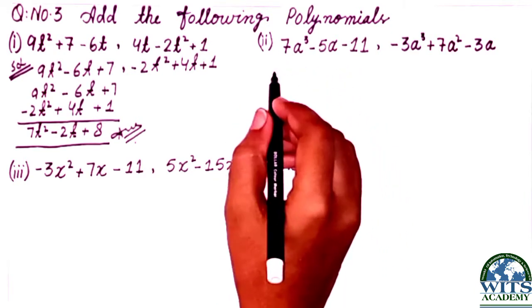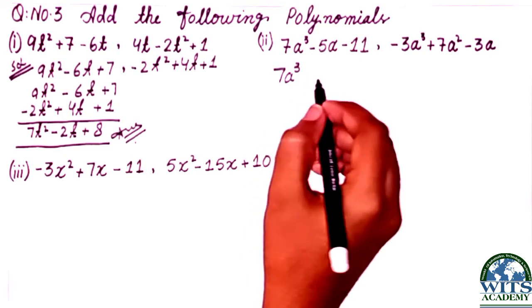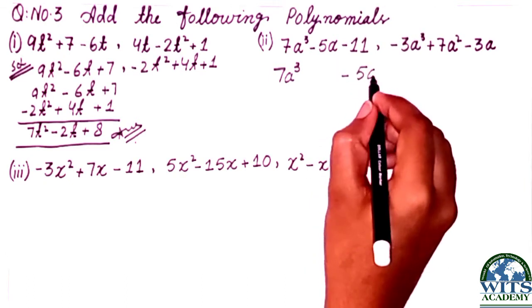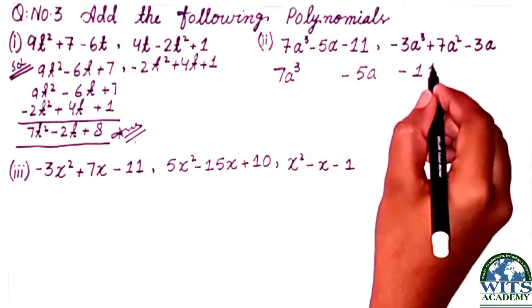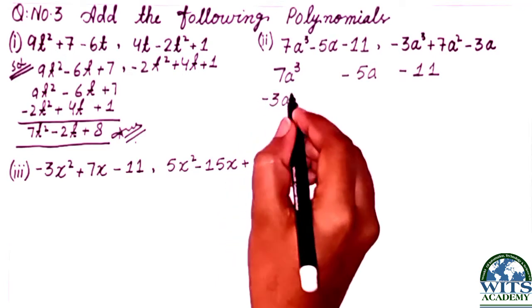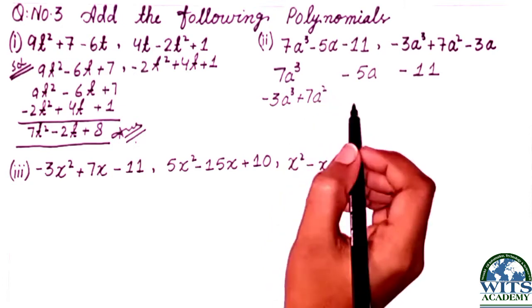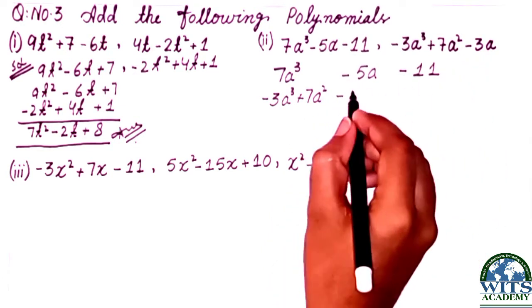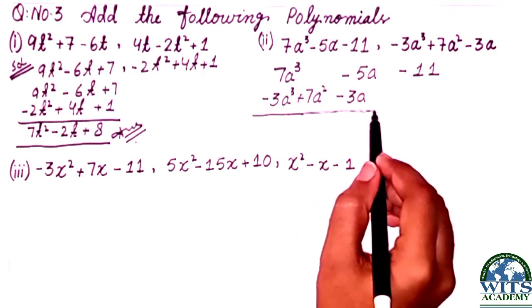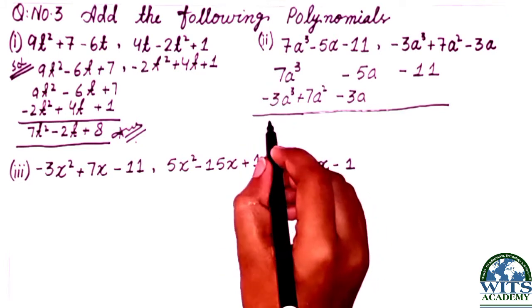Now point number two. The first polynomial is already arranged. The second one after comma is also arranged. Now, 7a cubed - the square value is not given here, so we'll leave the square place empty. After comma we have 5a squared minus 15a plus 10, then cube value minus 3a cubed plus a squared minus a minus 1.